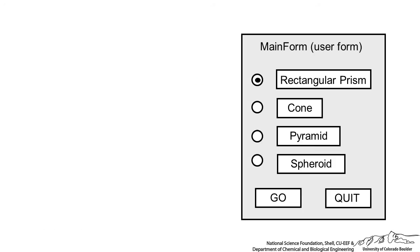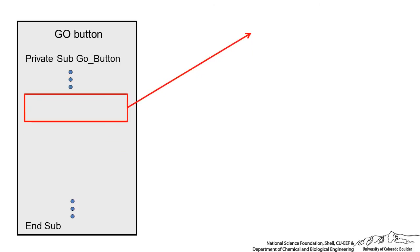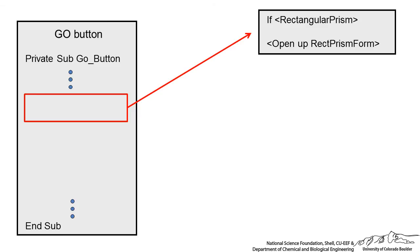When we talk about how to code the main form, we're going to make it so that when they click the Go button, it's going to do something. This is VBA code that's behind the Go button — it's a private sub called Go button click. In this Go button we're going to have if-then statements. If they selected the radio button corresponding to the rectangular prism, then we're going to have some code to open up that rectangular prism form.